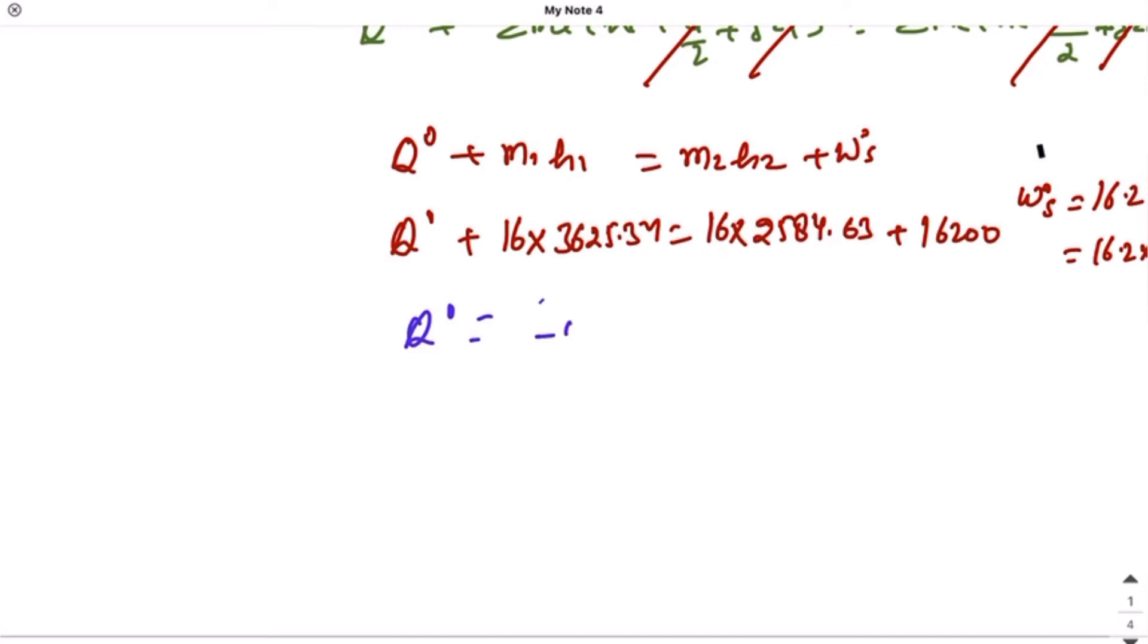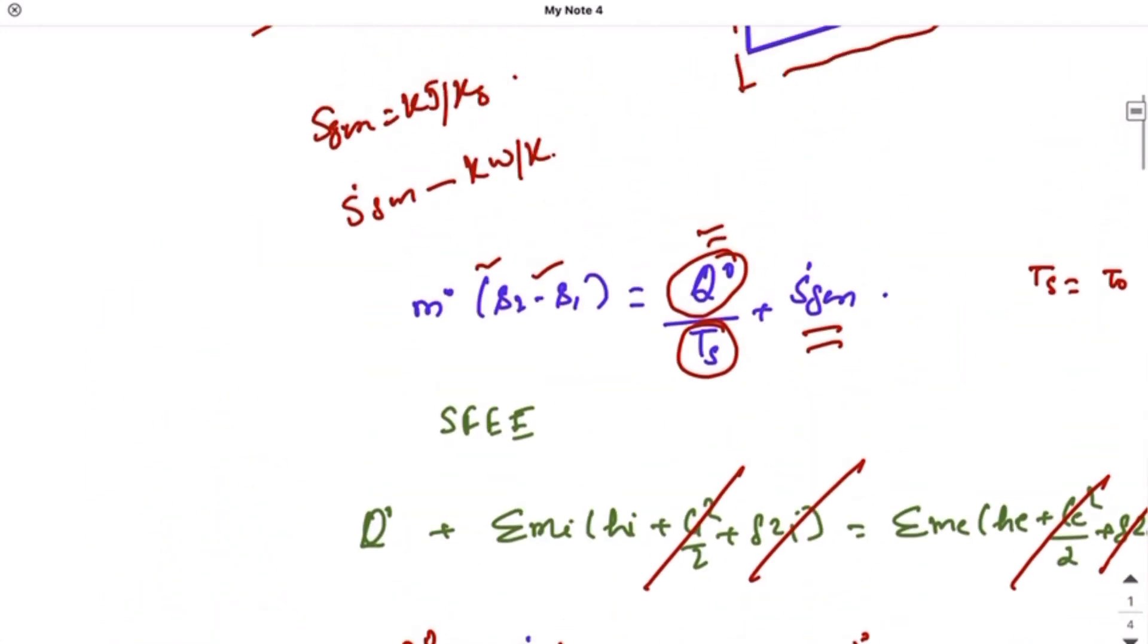This is in kilowatt, remember, because m1 is in kilogram per second and h1 is in kilojoule per kg, so this gets cancelled. You will get kilojoule per second, which is kilowatt. So the unit of q is kilowatt. You can check from this equation as well. This, this, this—I have to find in kilowatt per kelvin, so this must be in kilowatt because this is in kelvin.